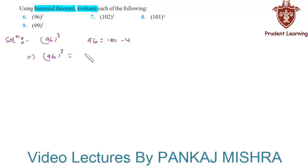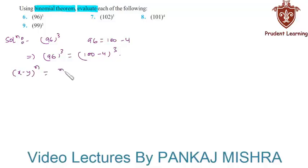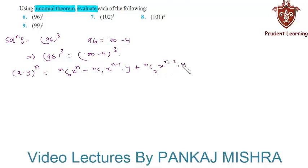This implies 96 cube is equal to (100 minus 4) whole cube. Now by using the Binomial Theorem, we have the expansion for (x minus y) whole raised to the power of n, which equals nC0·xⁿ minus nC1·x^(n−1)·y plus nC2·x^(n−2)·y² all the way up to (−1)ⁿ·nCn·yⁿ.